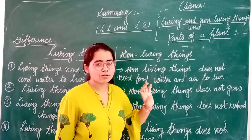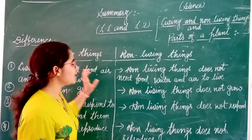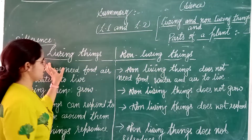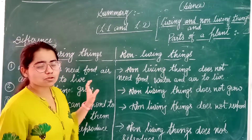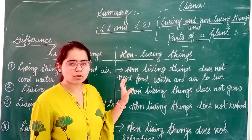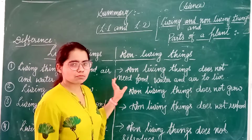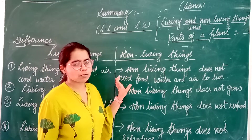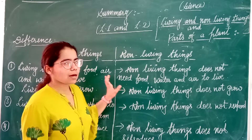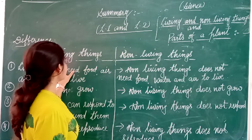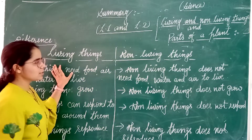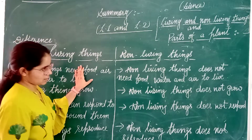The definition of living things: things that breathe, move, make sound, can respond to changes around them, and reproduce — all are qualities of living things.